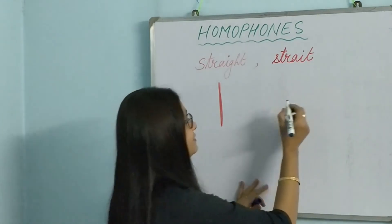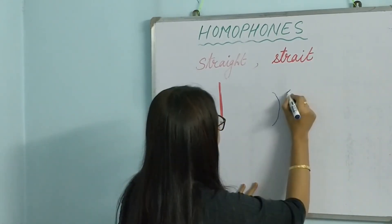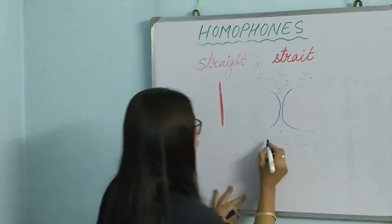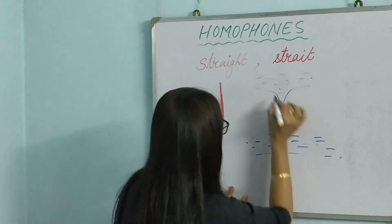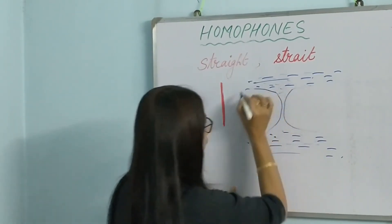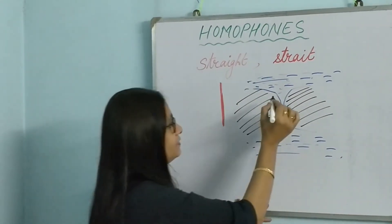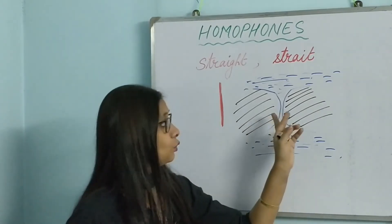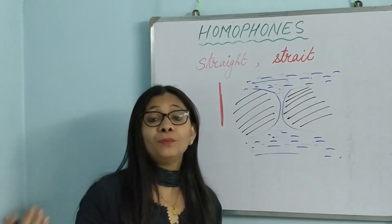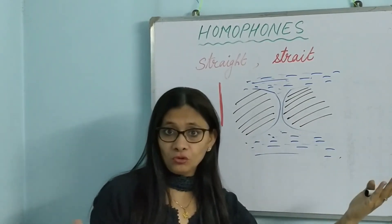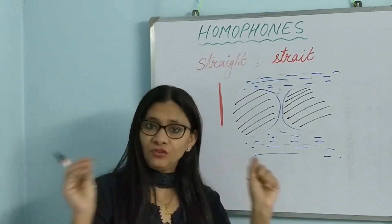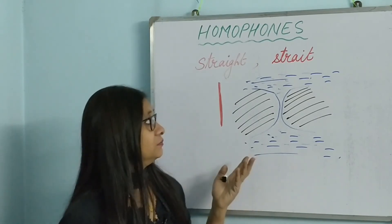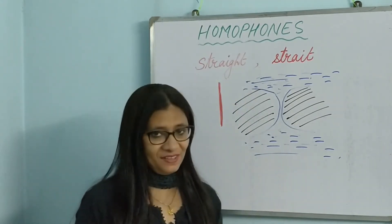A strait is a geographical term. Imagine land on both sides and large bodies of water on either end — a strait is a narrow passage of water which connects two large water bodies. For example, the Strait of Gibraltar connects the Atlantic Ocean with the Mediterranean Sea. So the meaning is entirely different, but the pronunciation is the same — making them homophones.